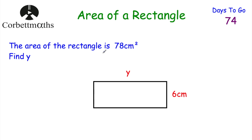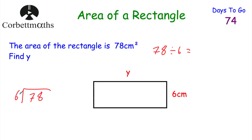We've got a rectangle with area 78 centimetres squared and width 6 centimetres, and we've been asked to find its length Y. We know the length multiplied by the width gives us the area, so this number multiplied by 6 is equal to 78. We take the area 78 and divide by the width 6: how many 6s go into 7? One, remainder 1. How many 6s go into 18? Three. So that's 13. The length is 13 centimetres. Check: 13 multiplied by 6 equals 78. ✓